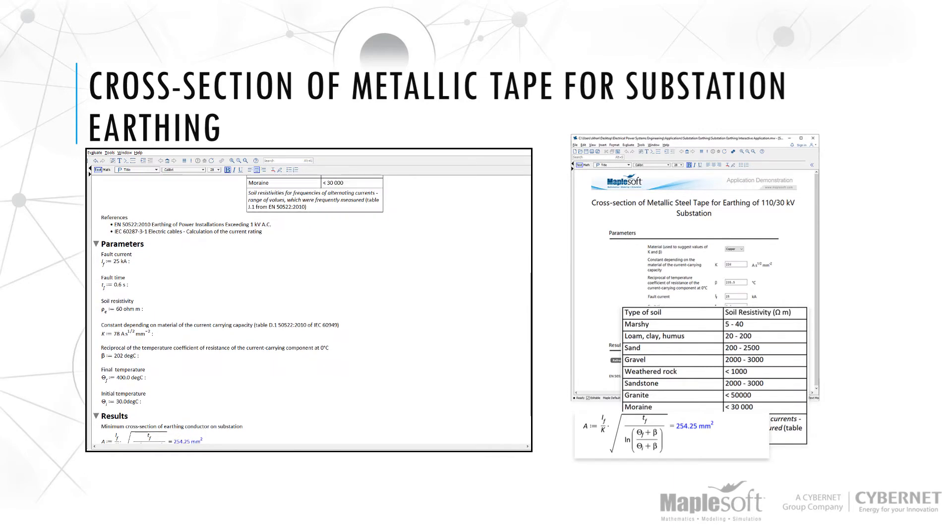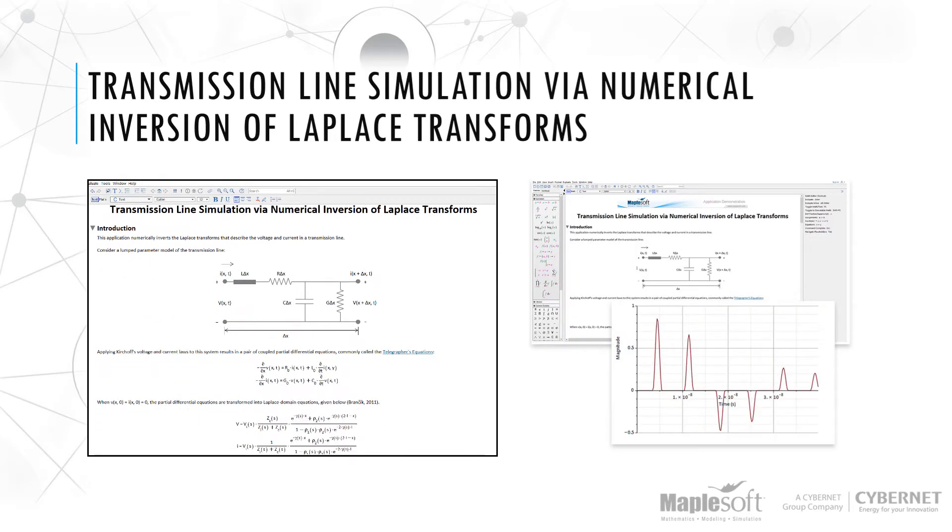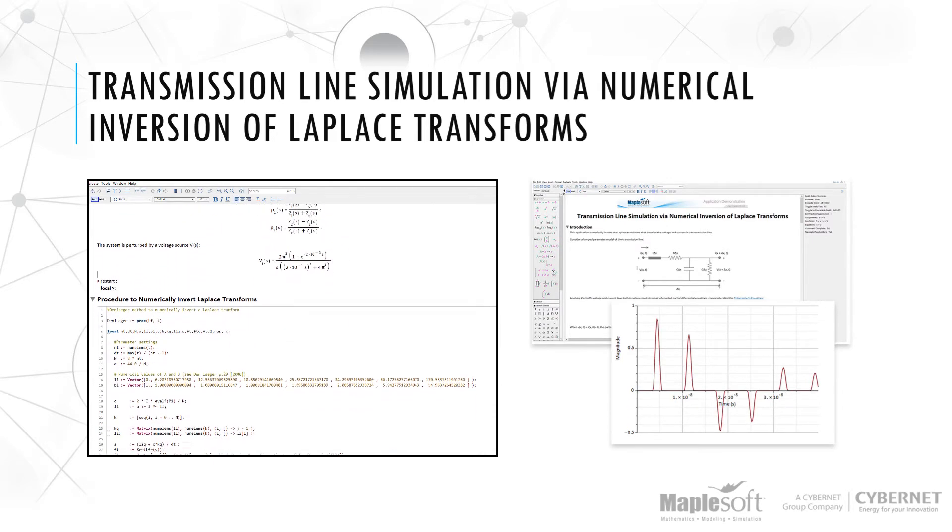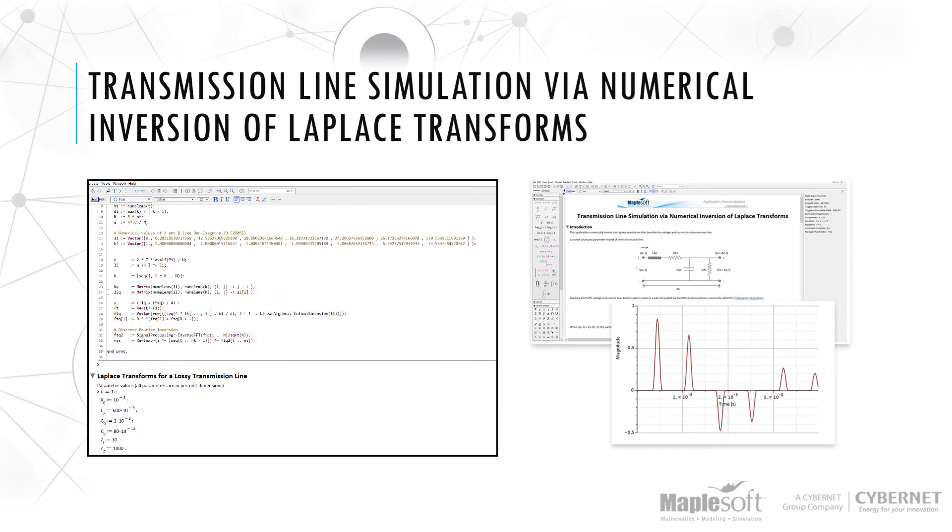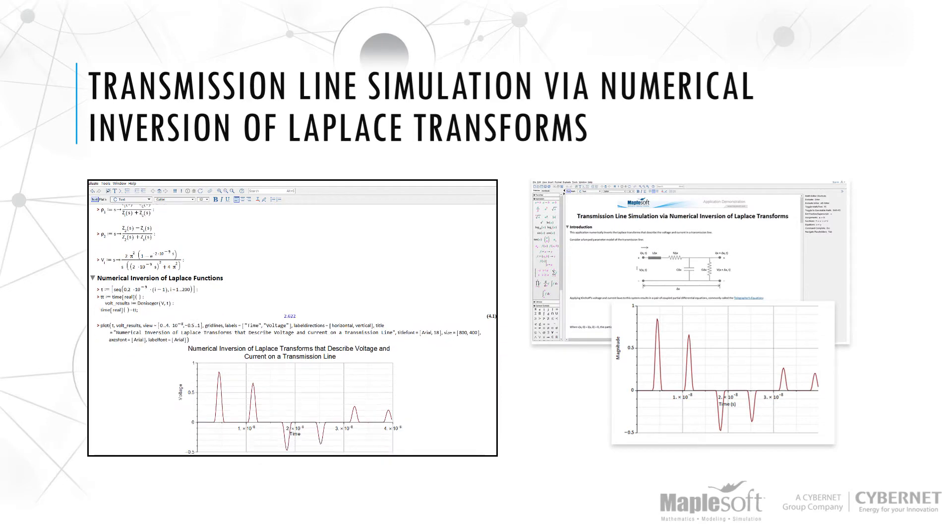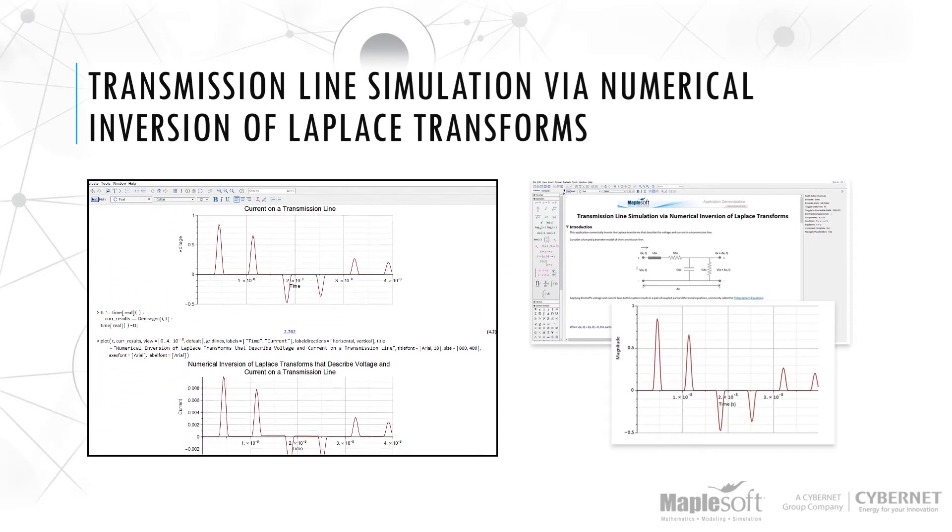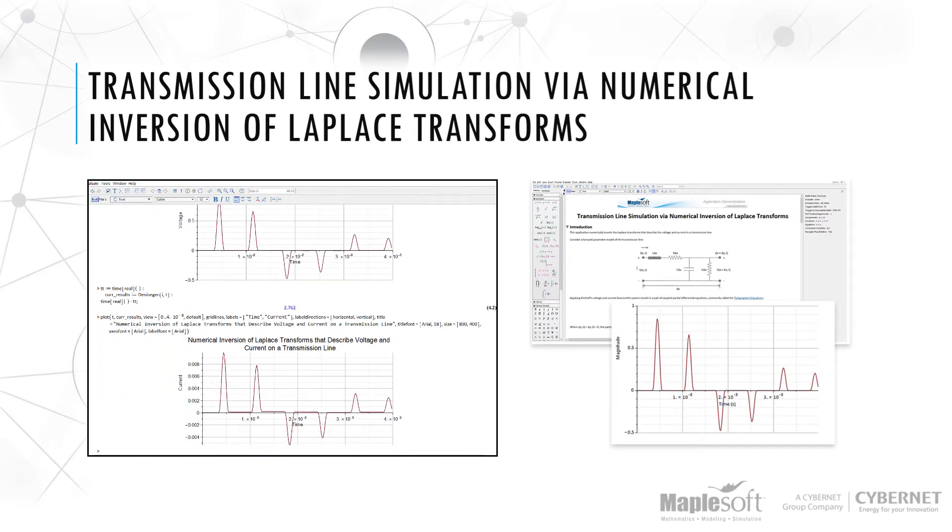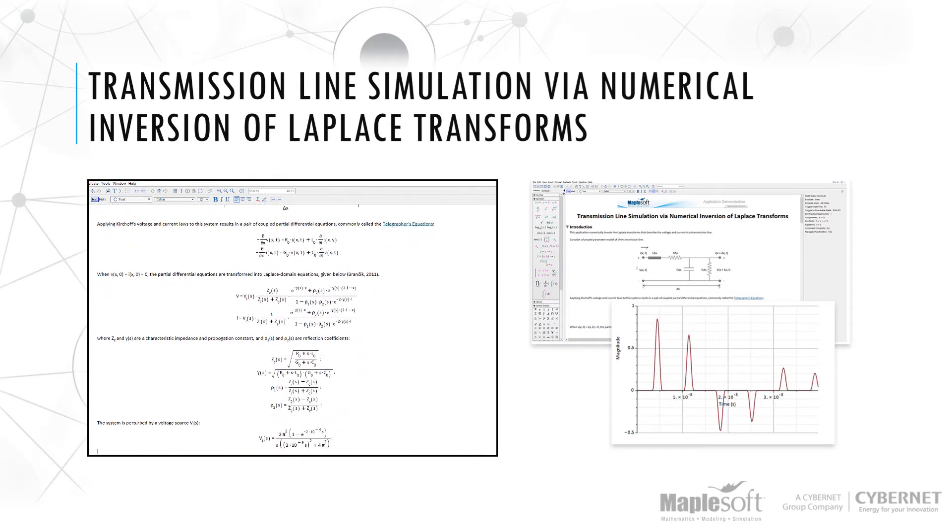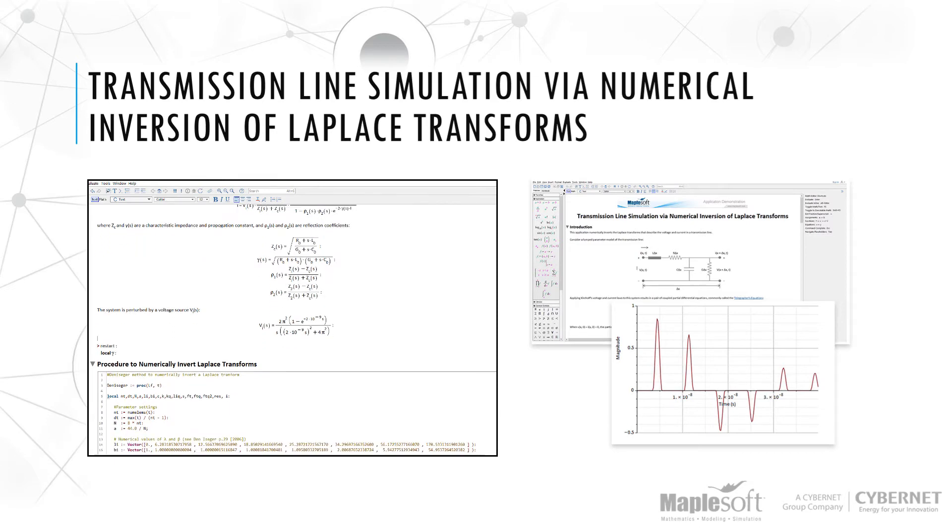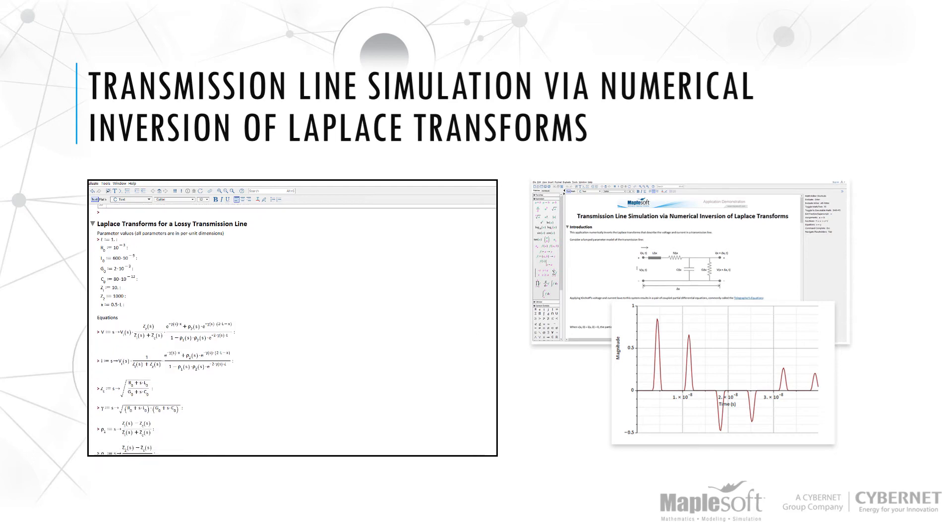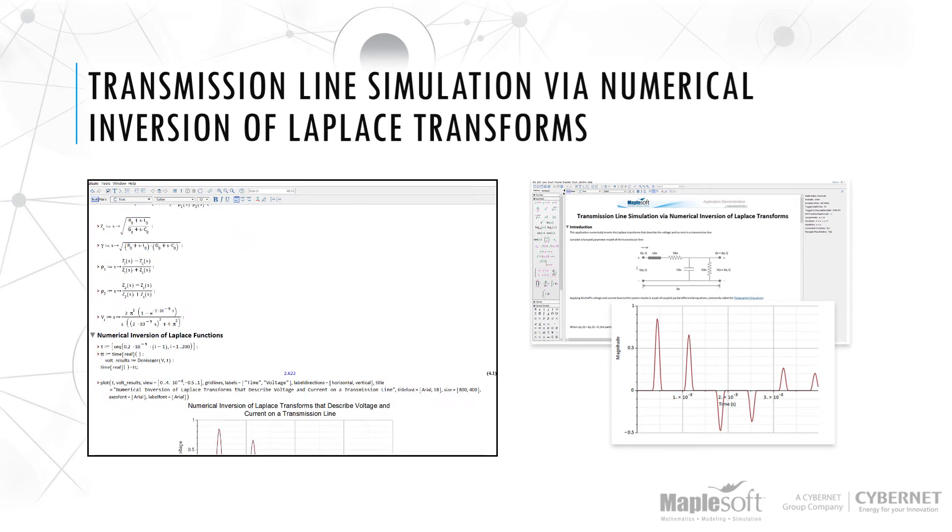Transmission line simulation via numerical inversion of Laplace transforms. Using Maple, you can numerically invert the Laplace transforms that describe the voltage and current in a transmission line. This requires fast, efficient numerical algorithms fluidly connected to a broader toolset of plots and documentation. The Laplace transforms are based on the telegrapher's equations, which are a pair of coupled partial differential equations. The results describe the transient variation of current and voltage at any point on the transmission line.